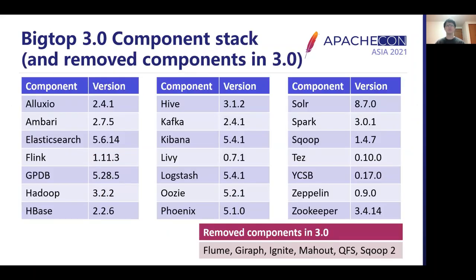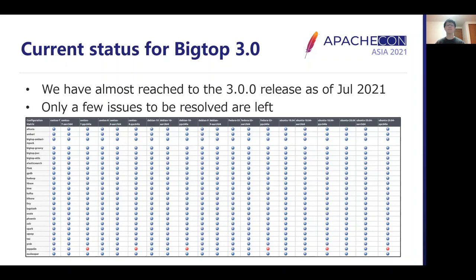Here is the full list of Big Top 3 components. In addition to Hadoop, it includes a wide range of Big Data software such as key-value store, SQL engine, streaming processing engine, streaming storage, log collector, notebook, and so on. Unfortunately, some components will be dropped due to incompatibility with Hadoop 3 or project inactivity. As of recording this talk, Big Top 3 is not released yet, but it will be released in the future.